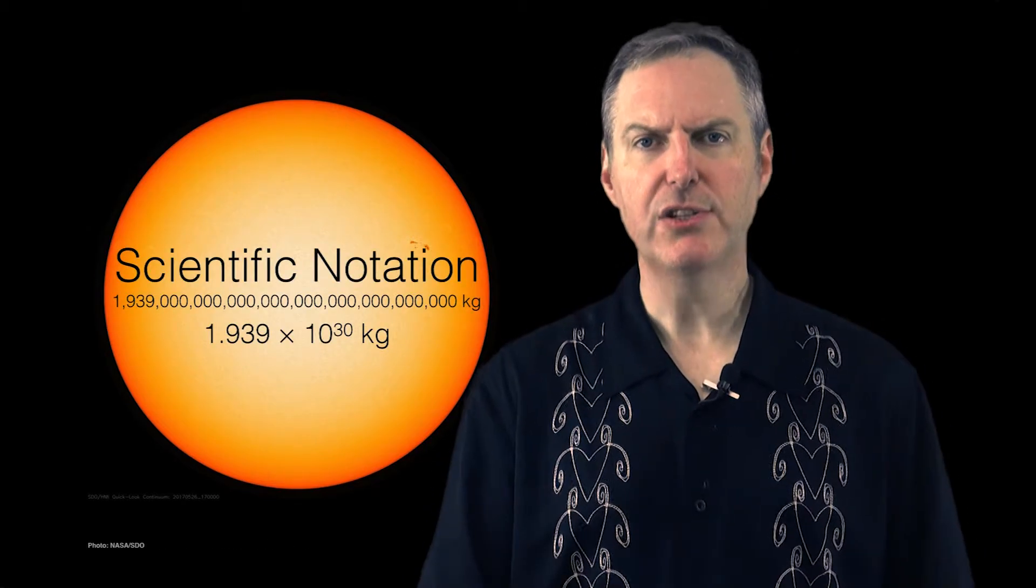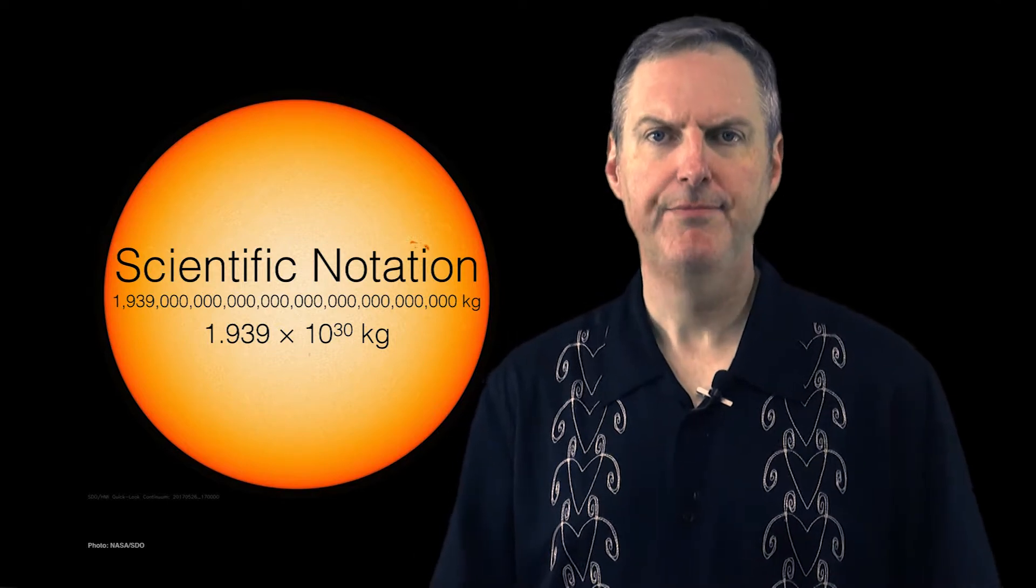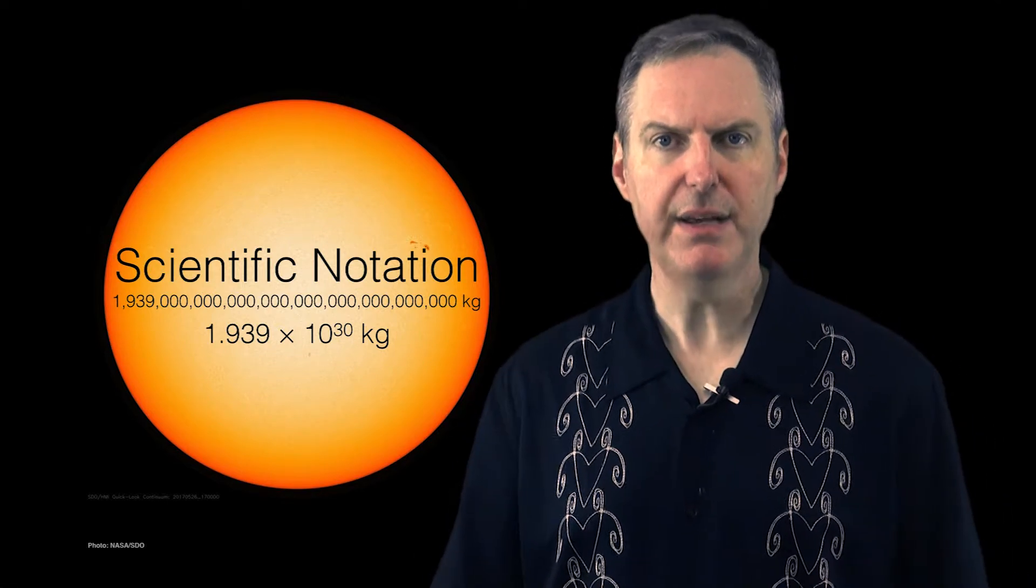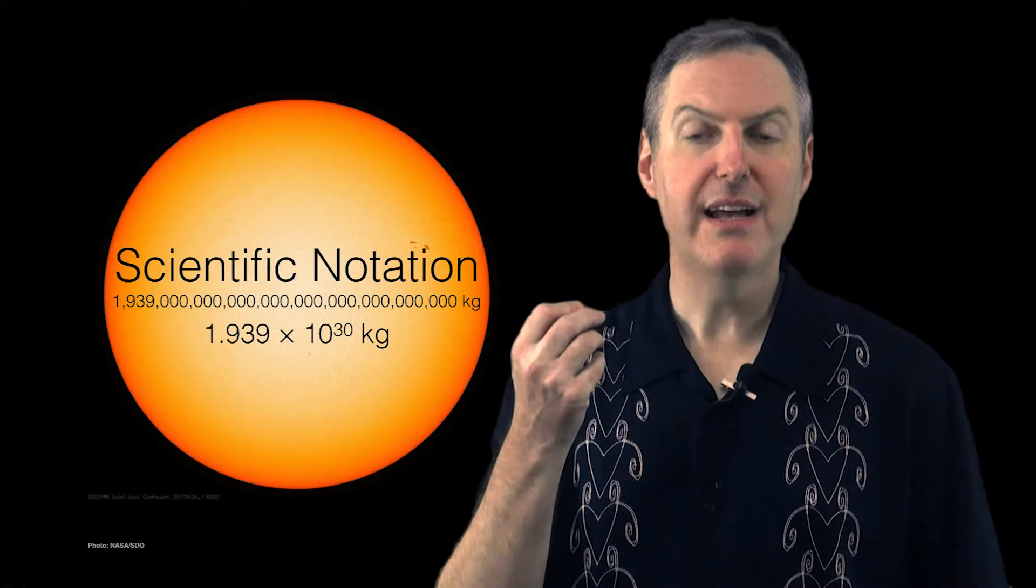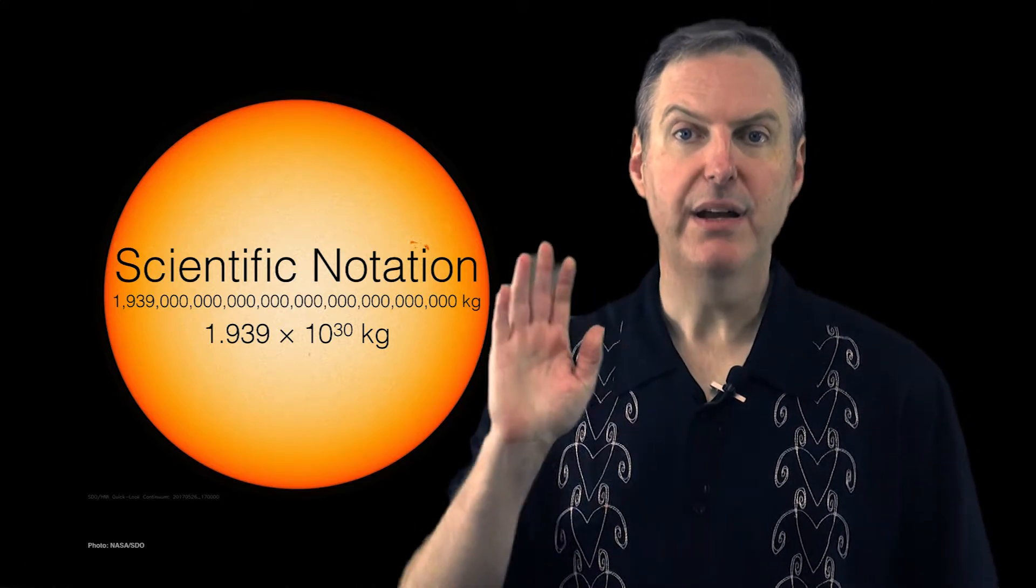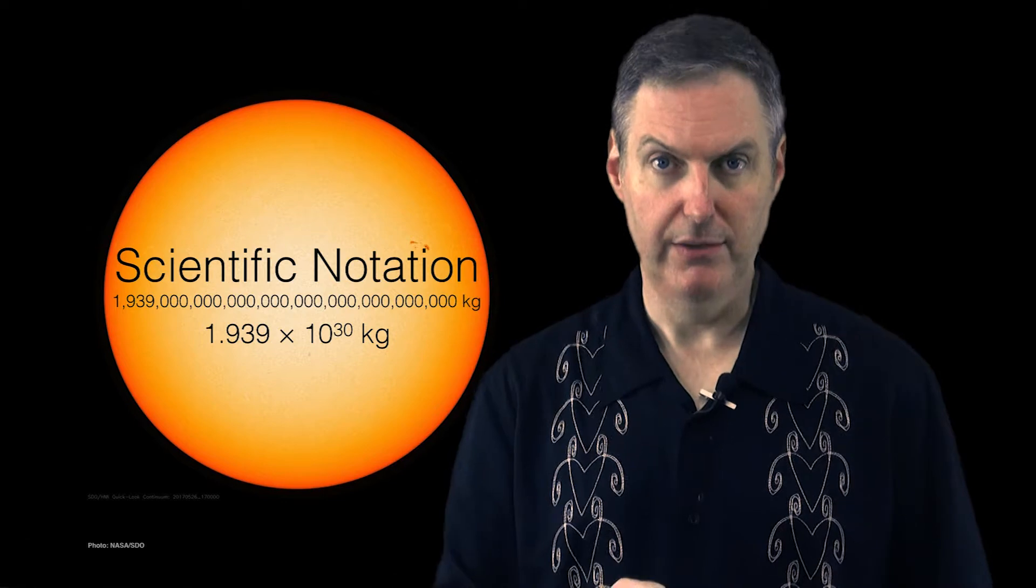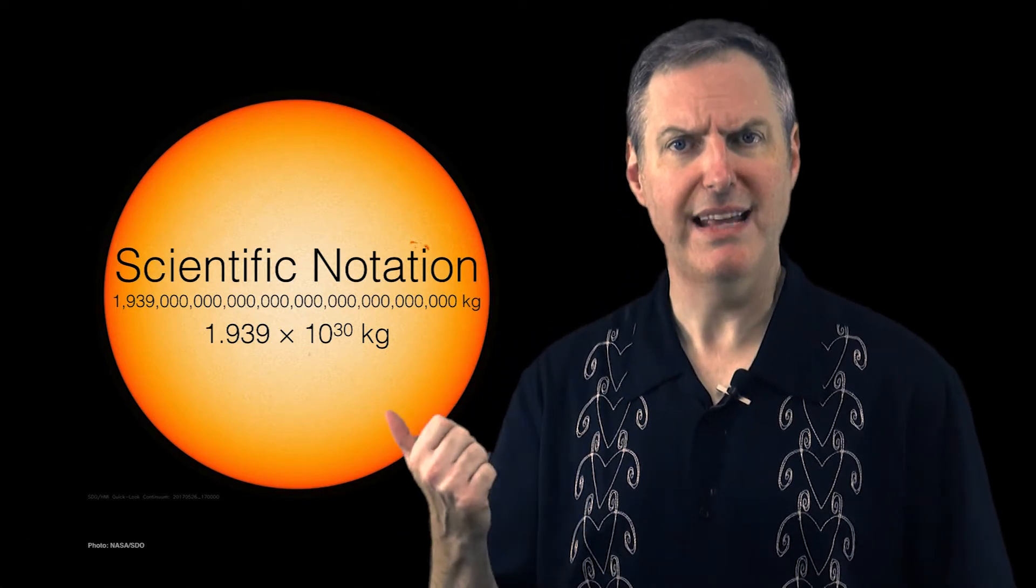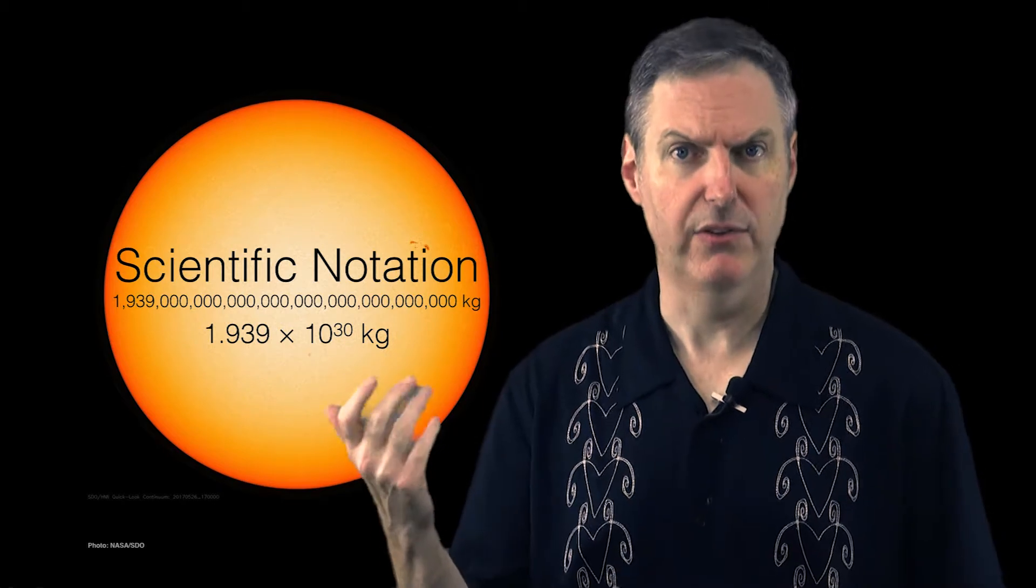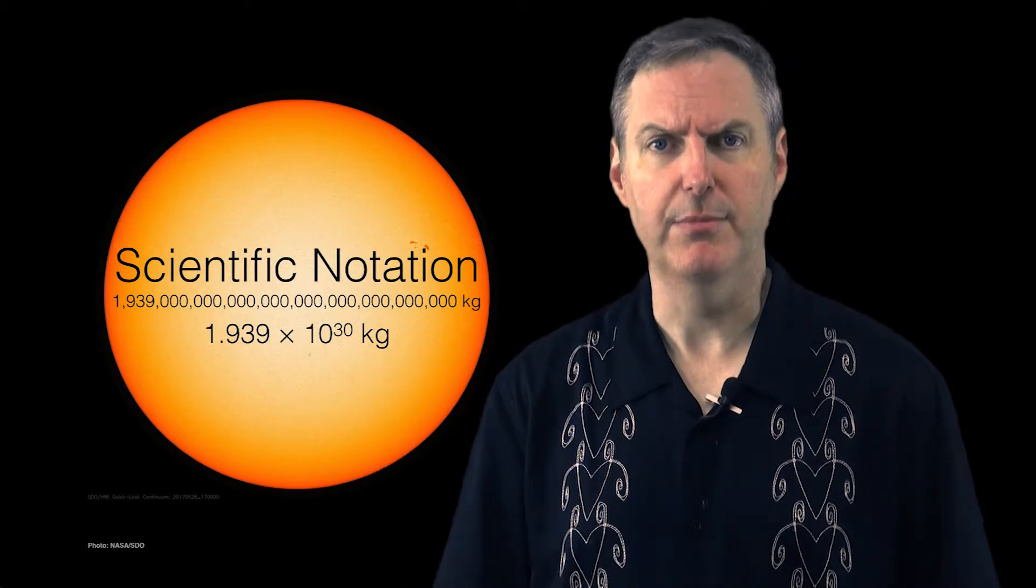So scientific notation can come to our rescue here. What it does is it takes this very big number and expresses it in a compact form that is not only easier to write, but is error-proof as well, or at least close to error-proof. I mean, I'm not going to accidentally write down twenty-nine when I meant to write down thirty.